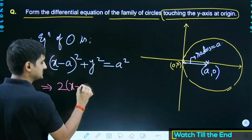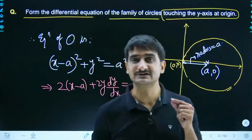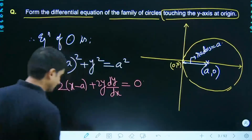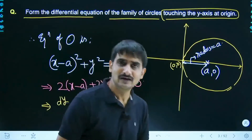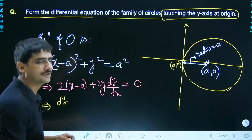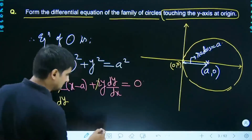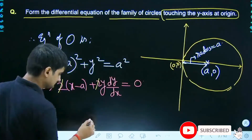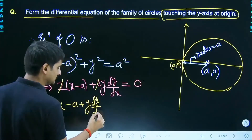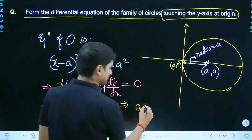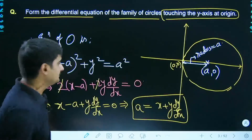Differentiating: 2(x − a) + 2y(dy/dx) = 0. Since 'a' is a constant with respect to x and y, its derivative is zero. So dy/dx gives us x − a + y(dy/dx) = 0, from which a = x + y(dy/dx). Now we have the value of 'a' in terms of x, y, and dy/dx.